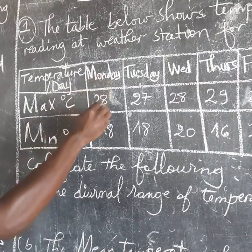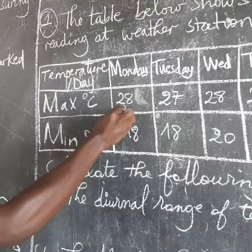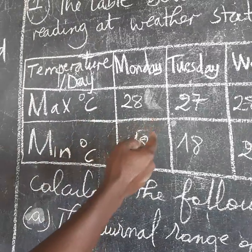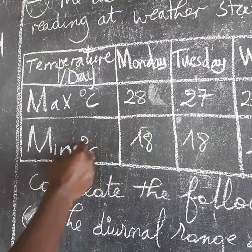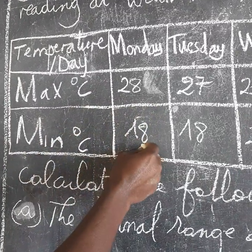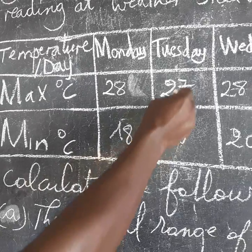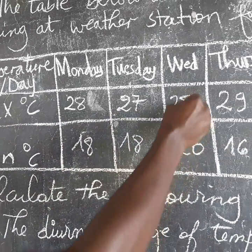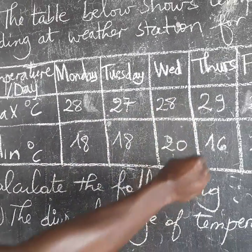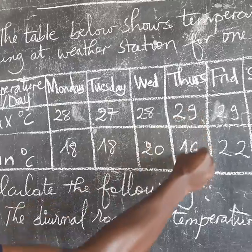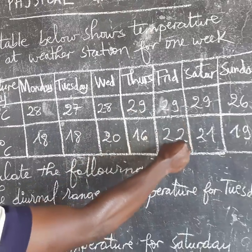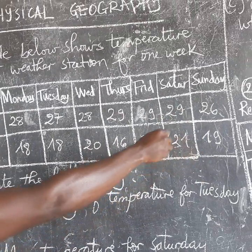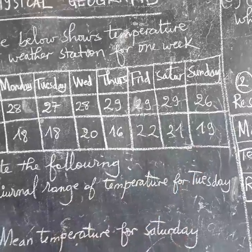On Monday we had a maximum of 28°C and a minimum of 18°C. Tuesday: 27 and 18. Wednesday: 28 and 20. Thursday: 29 and 15. Friday: 29 and 22. Saturday: 29 and 21. Sunday: 26 and 19.